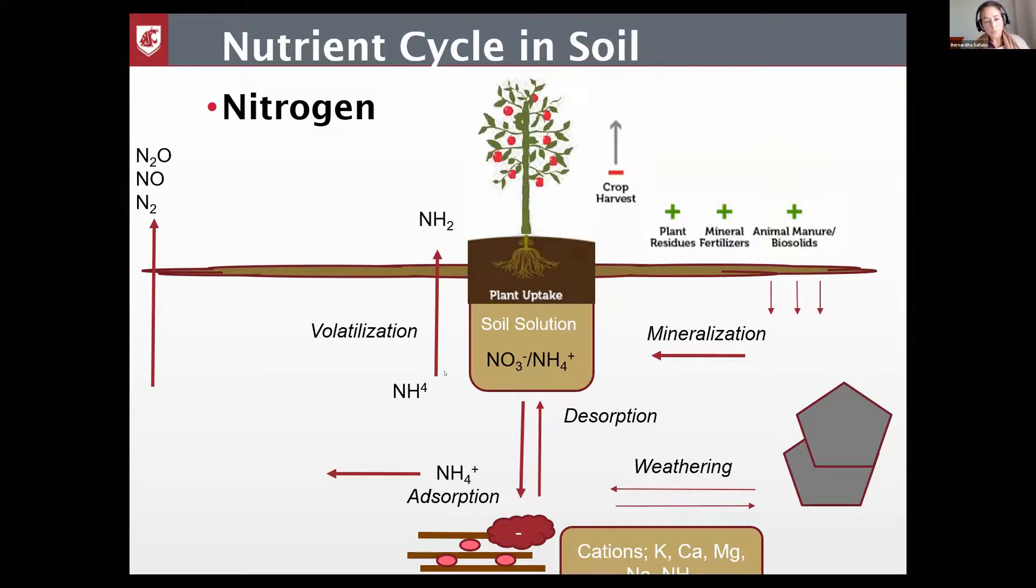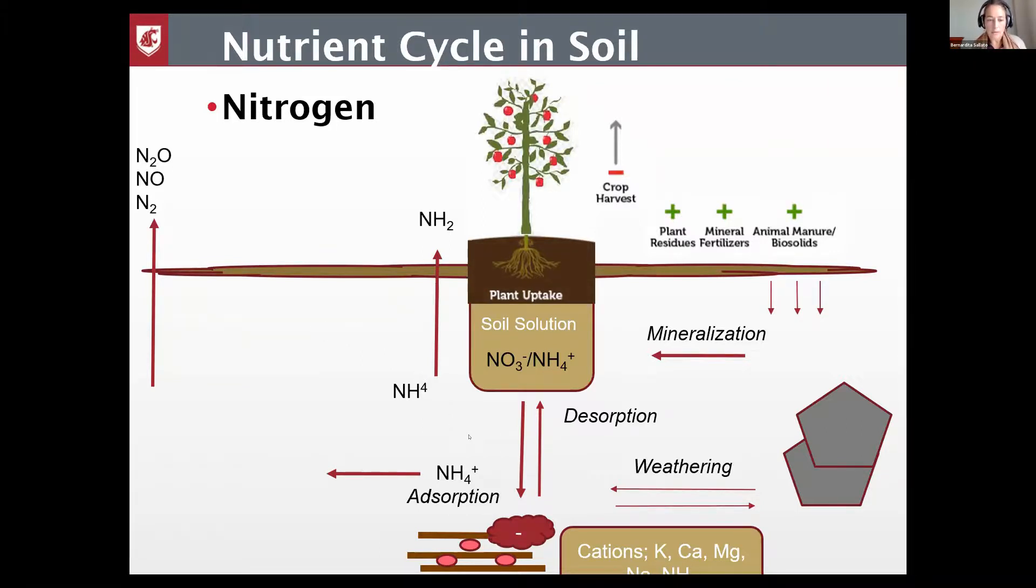But if we put ammonium under very hot conditions and dry conditions, we can lose that ammonium in the volatilization process. So that's the good part—the absorption stays longer in the soil, but it can also volatilize. In very high pH, above 8.5, it can also be lost by volatilization.